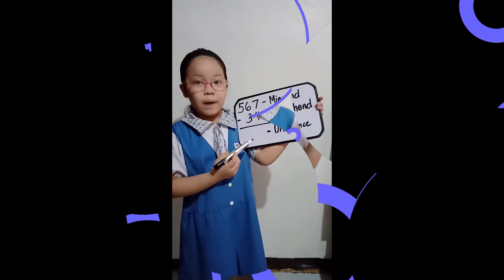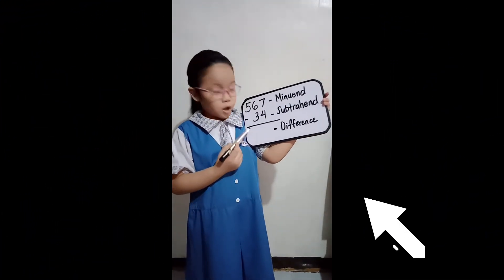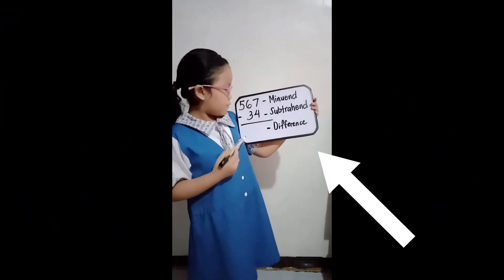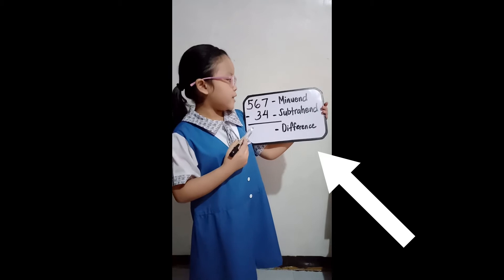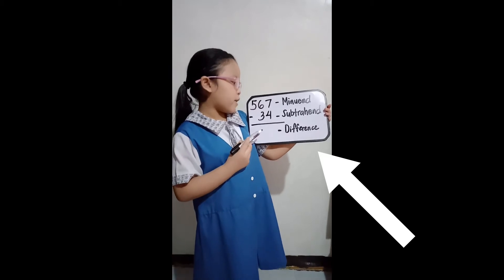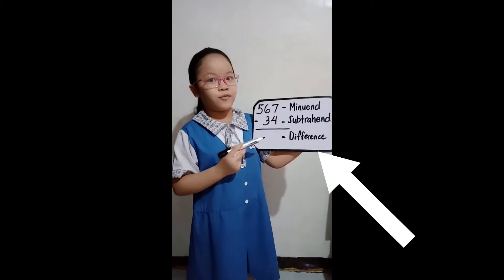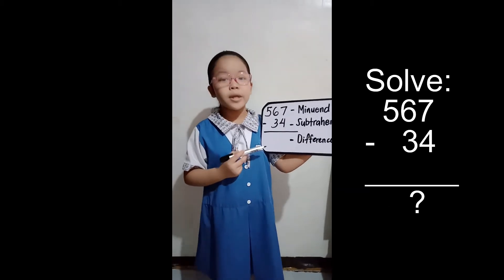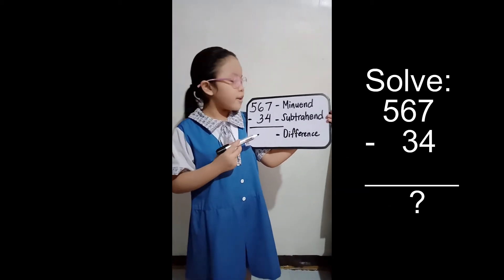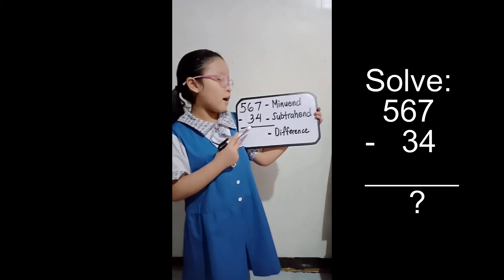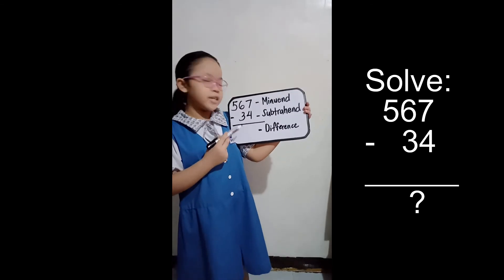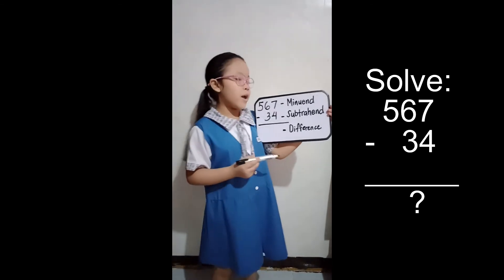This is the math problem that we're going to solve: 567 minus 34. We're going to subtract 34 from 567.